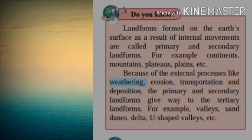Apart from primary and secondary, the third landform is created due to external processes. That is known as tertiary landforms. For example, valleys, sand dunes, delta, and U-shaped valleys. All these things you have also learnt in the standard 8th, 9th, and 10th lessons.